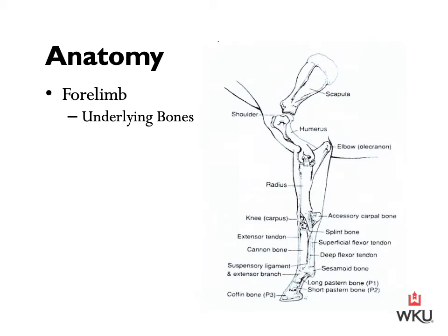When looking at the underlying bones of the forelimb, just a couple I want you to be able to identify. Starting at the top: the scapula, the humerus, the elbow, the radius, and the cannon bone — make sure you can identify those five. We'll dig a little bit deeper into the lower forelimb bones when we're looking at the parts of the hoof and specific bones located further down in our horse's anatomy.